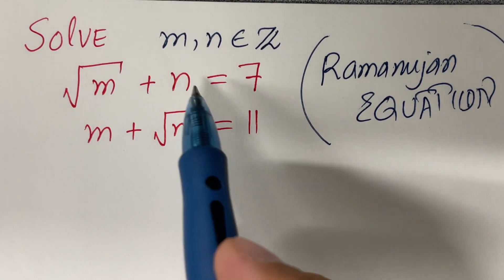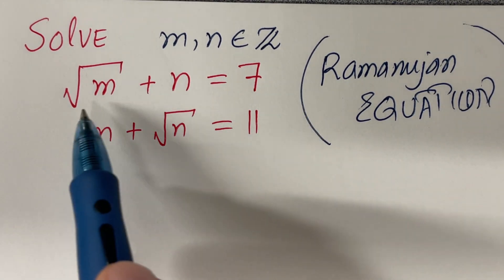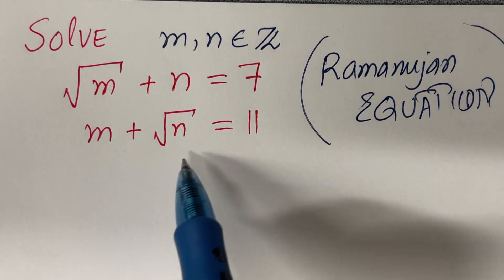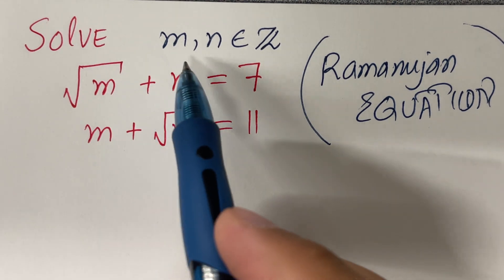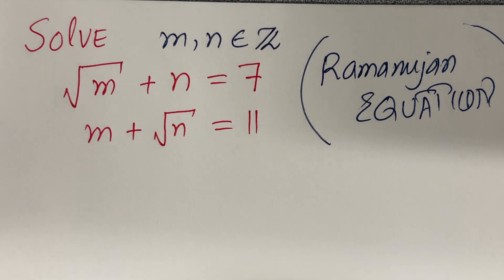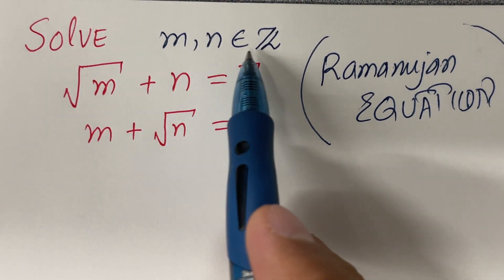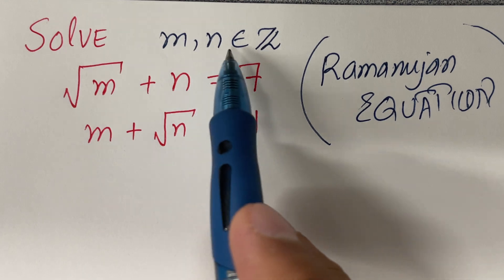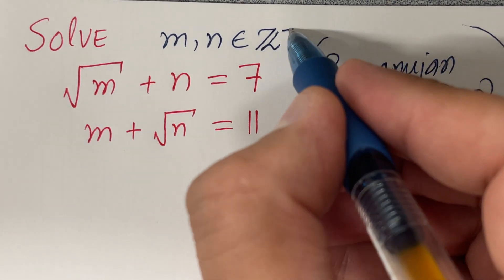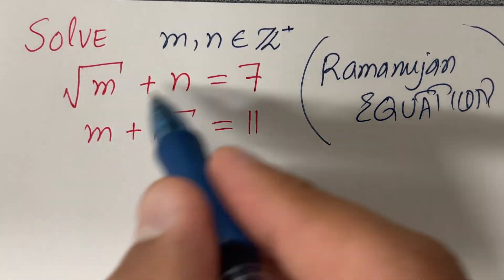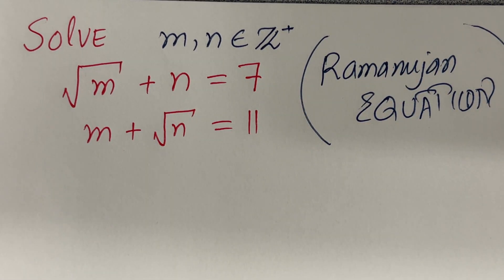In this video, we want to solve this nice Ramanujan equation. We are looking for positive integers that satisfy these set of two equations.